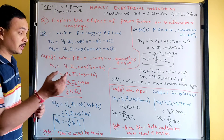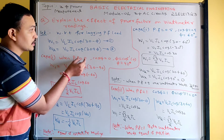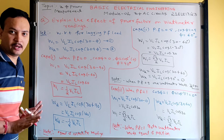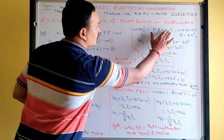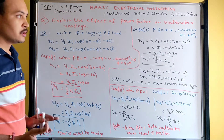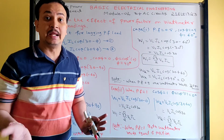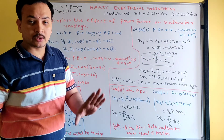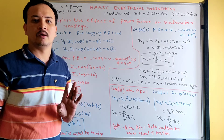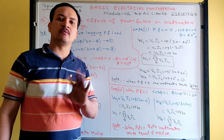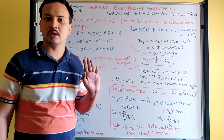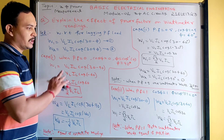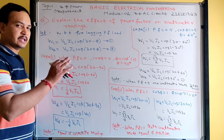For the remaining cases: when power factor is between 0 and 0.5, one wattmeter is positive and the other shows a negative reading but not zero. When power factor is more than 0.5 and less than 1, both wattmeters show positive readings but they are unequal — for example, one shows 5 kW and the other shows 7 kW. With this knowledge, you can analyze all conditions and easily judge the approximate power factor for any given problem data.